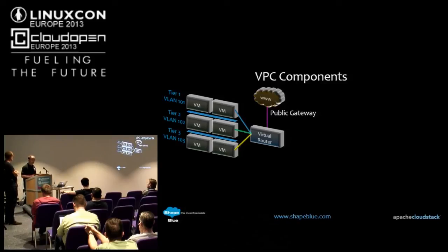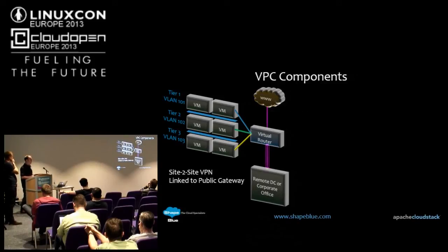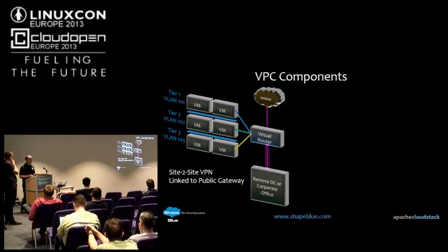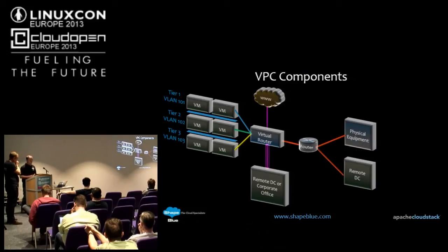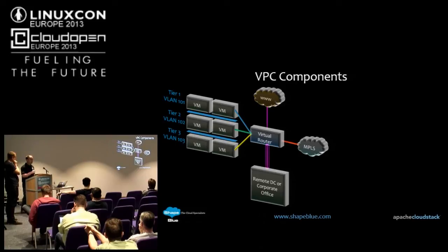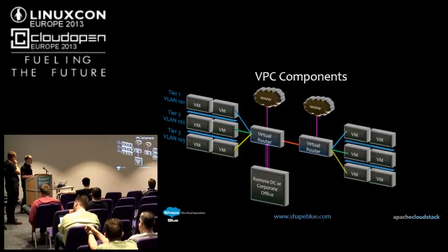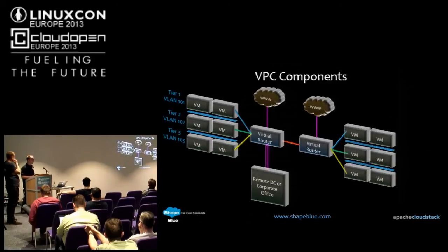We've got the public gateway that gives connectivity to the internet. VPCs also give us cool site-to-site VPN functionality — a standard virtual router lets you do user VPN, but a VPC also lets you have a permanent site-to-site connection to a VPN endpoint in your offices. Another cool feature is the private gateway — something admins can enable that gives you a second leg out of the VPC into the data centre. It can be used for connecting to other equipment, whether it's other routers going to another DC, an MPLS network, or another VPC architecture in a different data centre, with direct connections between the two VPCs.